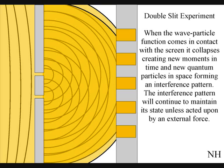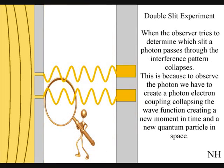When the observer turns on a detector to determine which slit a photon passes through, the interference pattern collapses. At that moment in time, the interference pattern disappears.